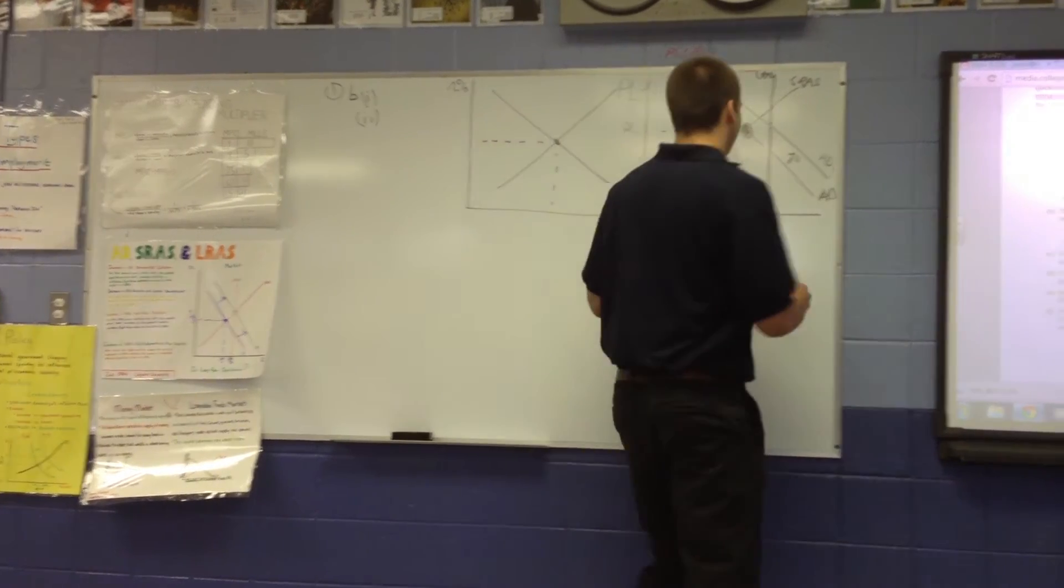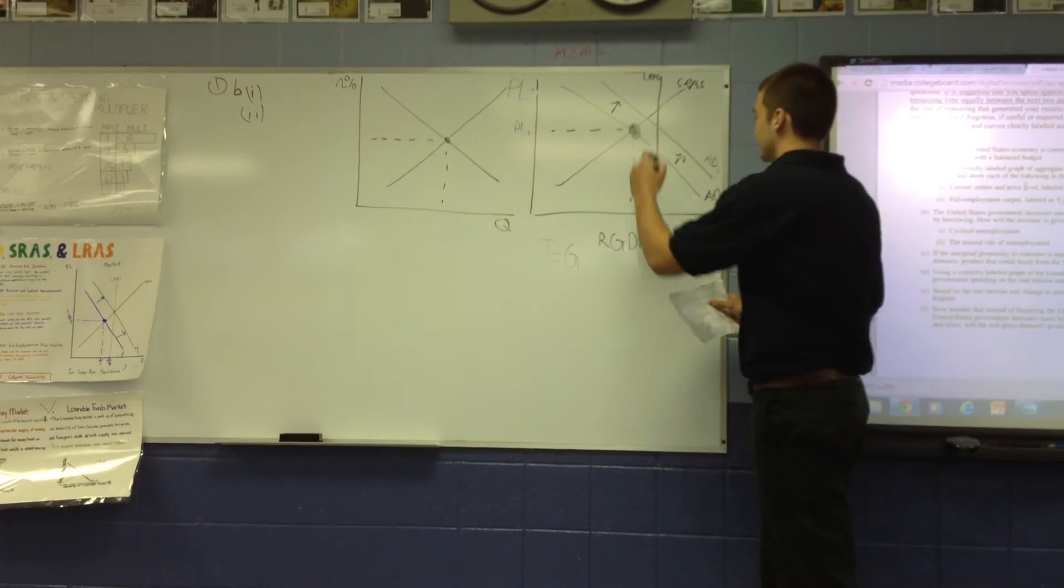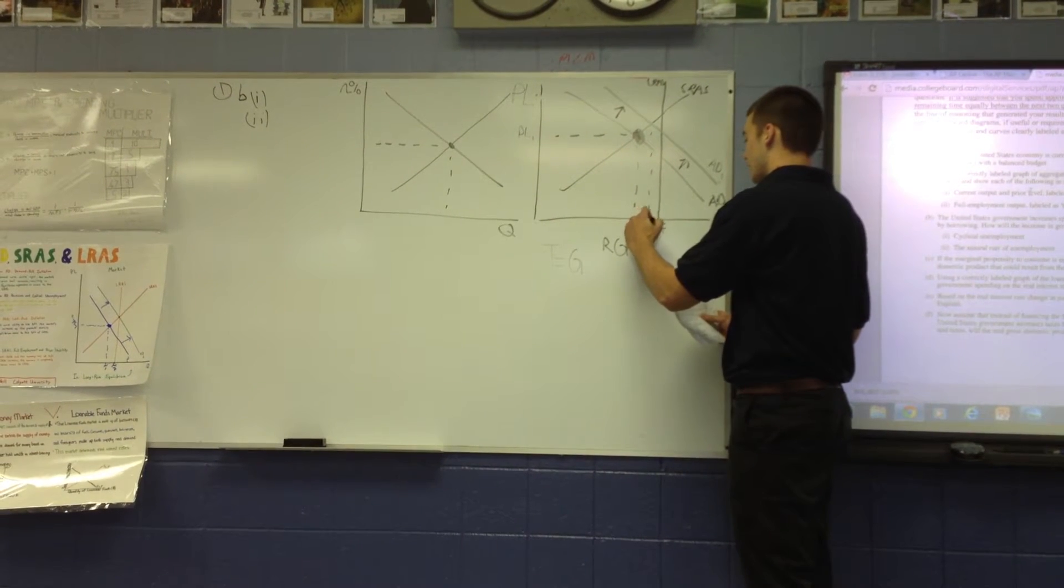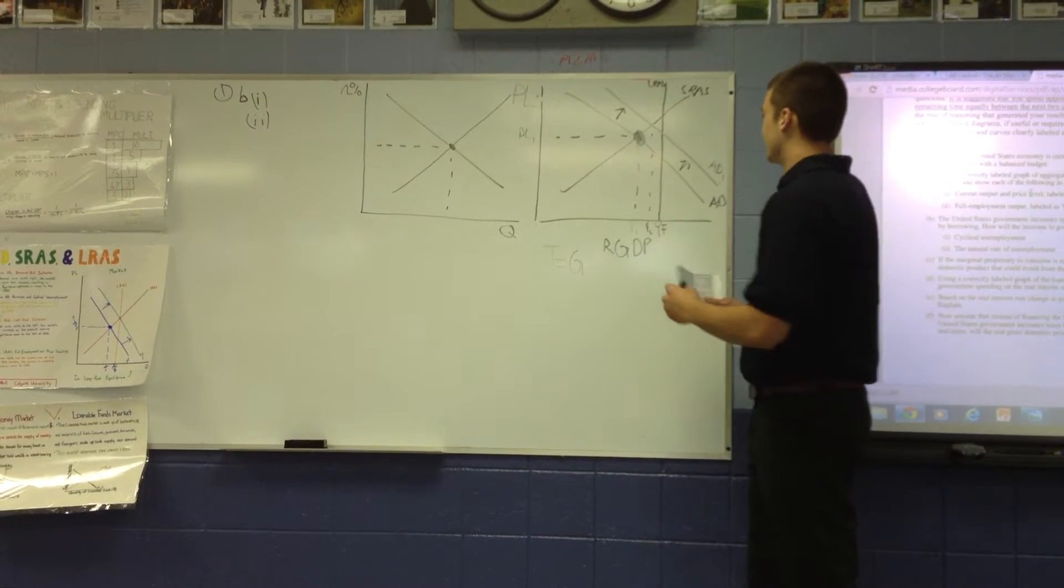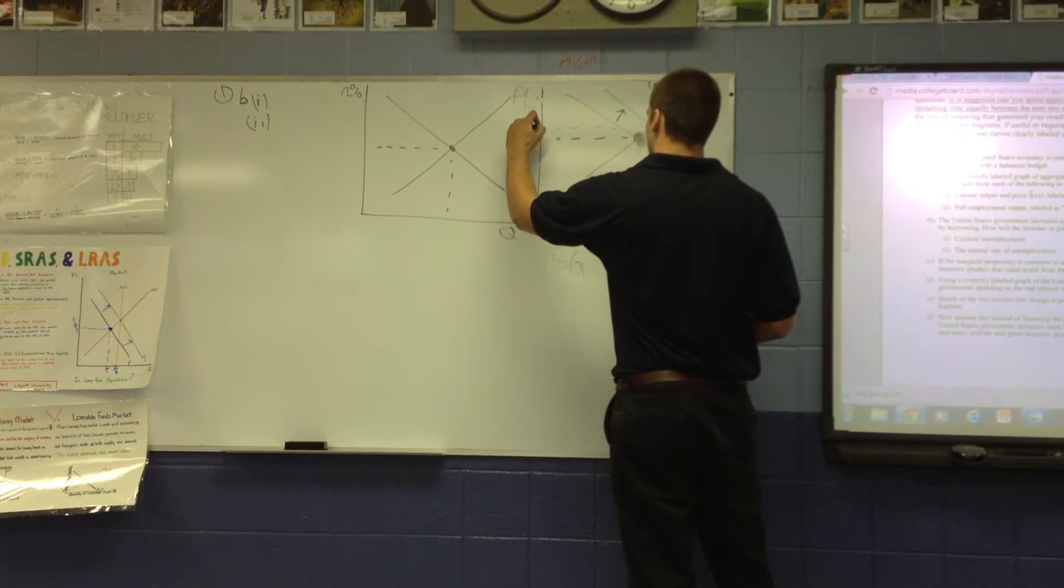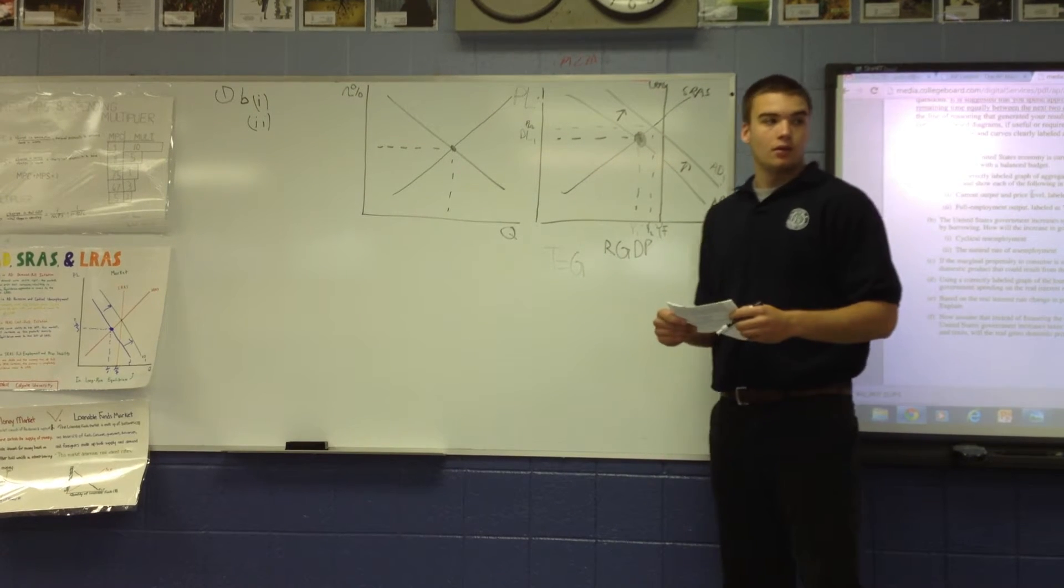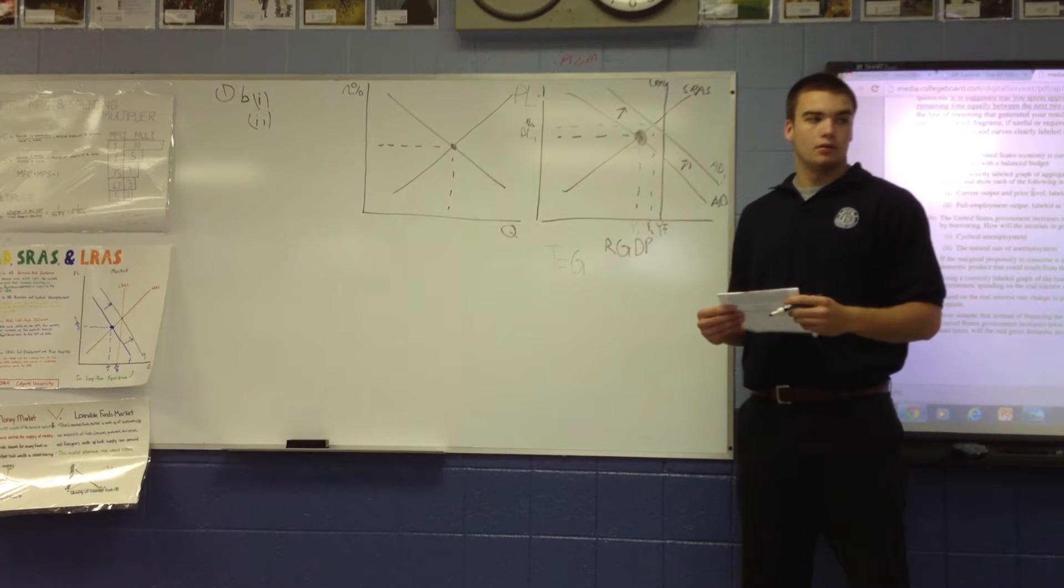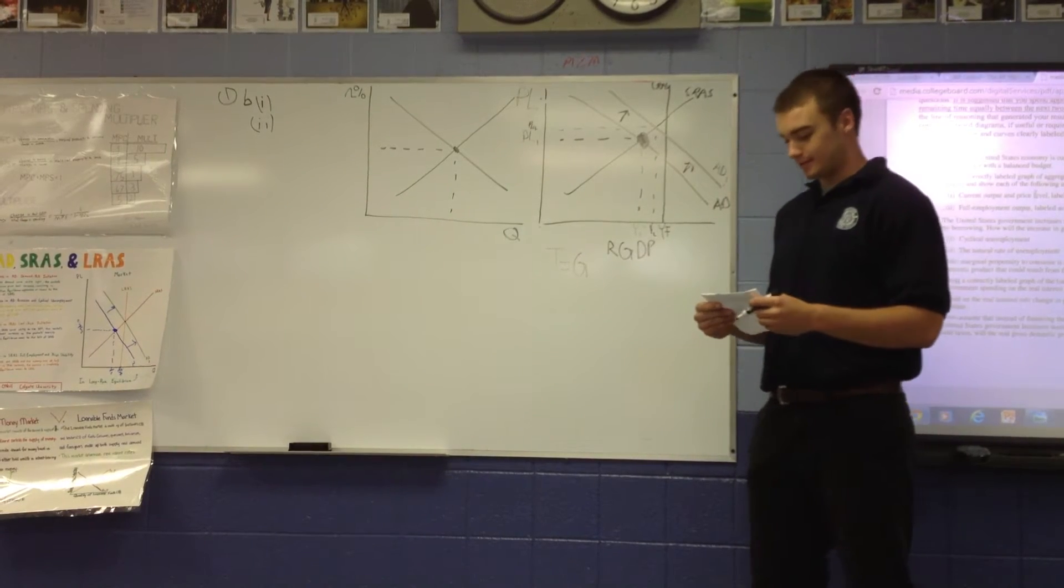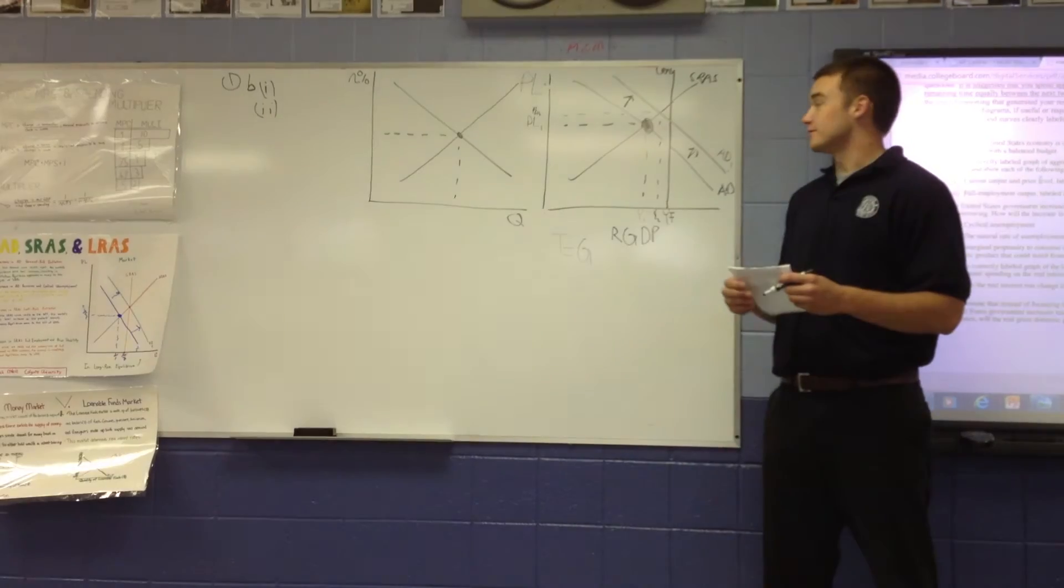So, when the U.S. government increases spending, it pushes the economy forward towards long run equilibrium, which reduces cyclical unemployment, but also raises the price level. Cyclical unemployment is reduced. What about the natural rate of unemployment? Natural rate of unemployment is the same, because long run aggregate supply doesn't increase.